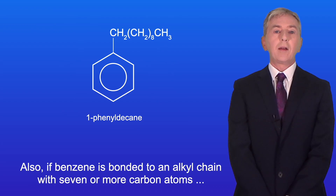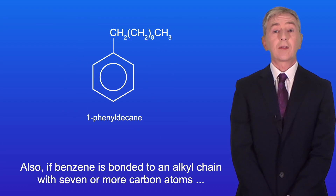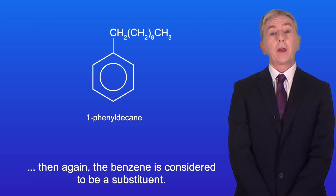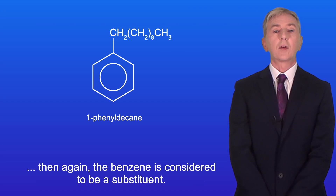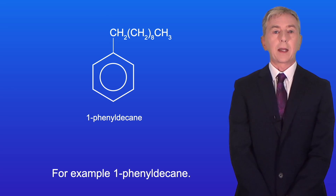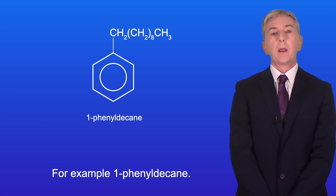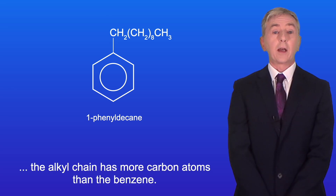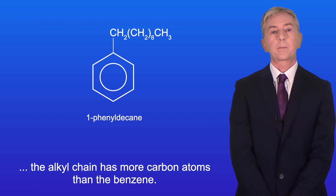Also if benzene is bonded to an alkyl chain with seven or more carbon atoms, then again the benzene is considered to be a substituent — for example, 1-phenyldecane. That's because in these cases the alkyl chain has more carbon atoms than the benzene.